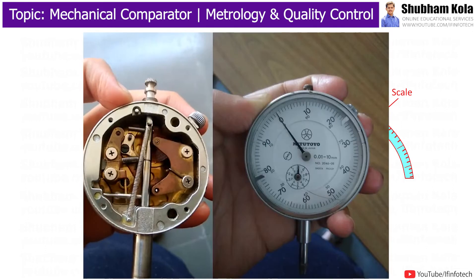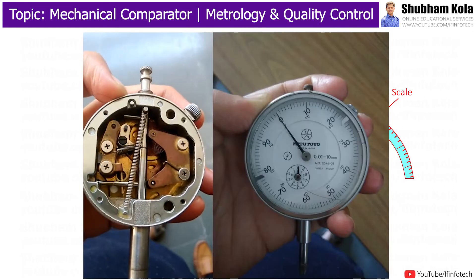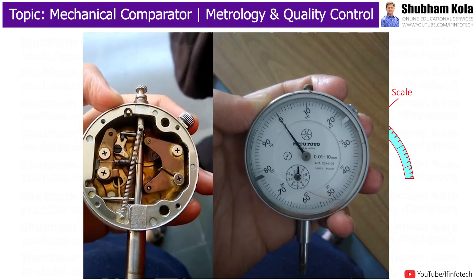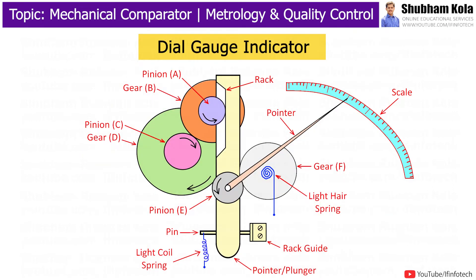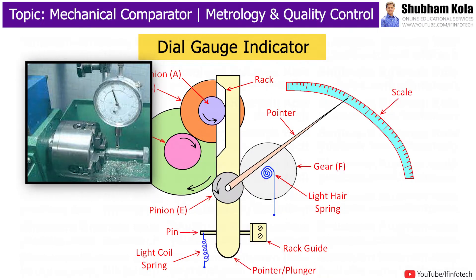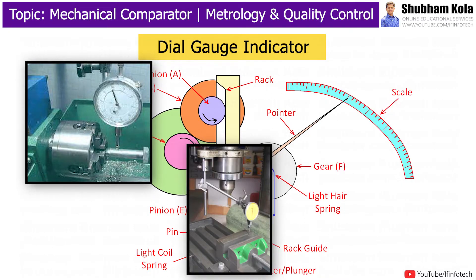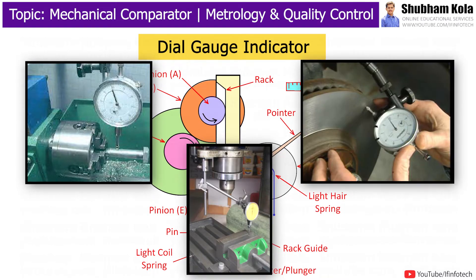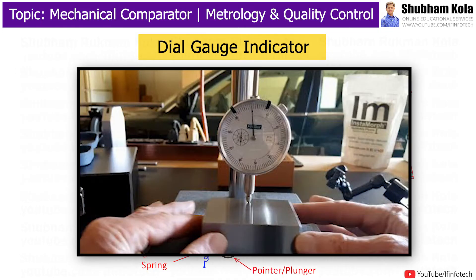In this video, we are going to learn about the Dial-cage Indicator. Dial-cage is a mechanical comparator used to align workpieces in machines such as lathe machines, milling machines, and grinding machines. It is also used to measure surface roughness and height differences on a surface plate.